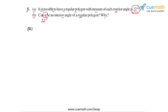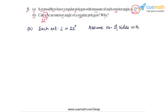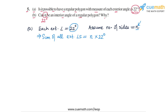Let's start with part A. We need to find whether it's possible to have a regular polygon where each exterior angle is 22 degrees. Let's assume the number of sides of the polygon is N. This means the sum of all exterior angles will be N × 22 degrees.